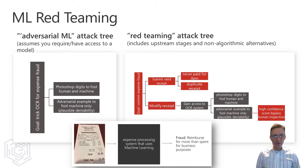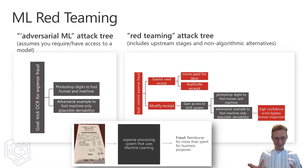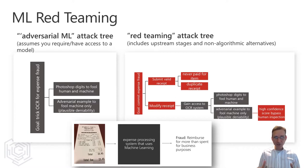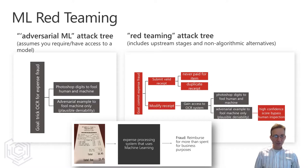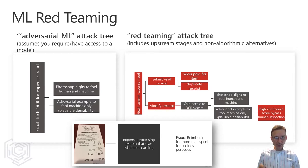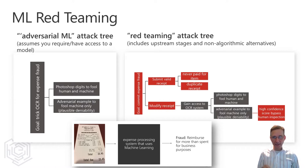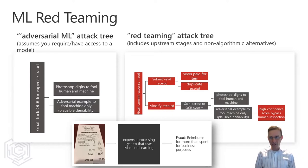For example, if an adversary wanted to commit expense fraud, she could do this by digitally altering real receipts to fool an automated system, similar to the tabby cat and guacamole example. However, a much easier thing to do is to simply submit valid receipts to the automated system that do not represent legitimate business expenses. So in some cases, an ML model or the data may indeed be the crown jewels. But securing an ML model is often only one part of securing against a broader attack, and it makes the most sense to think about ML security as part of, not separate from, the broader security concerns.